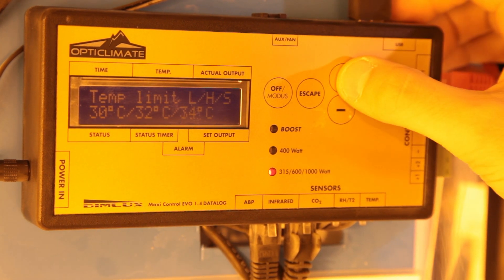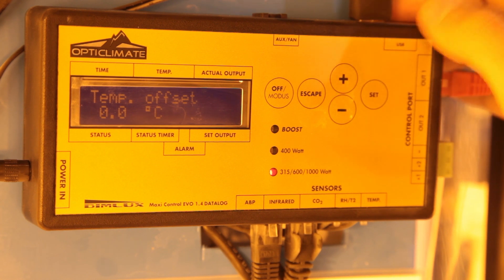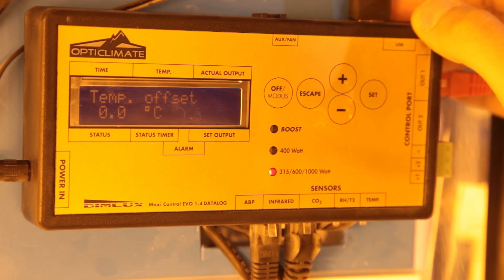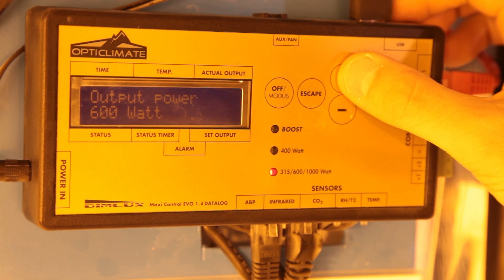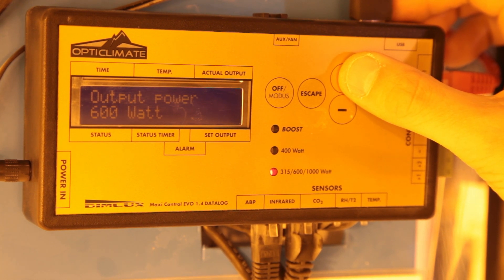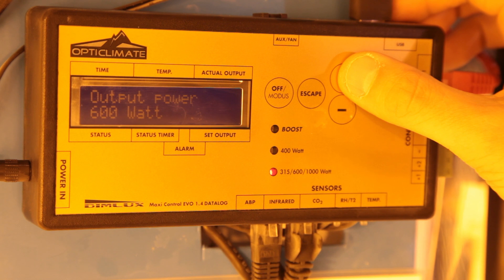Then we've got temperature offset quite simply this is a way of calibrating your temperature sensor to put it in line with your other equipment. Output power which is used to choose the type of lighting system that you intend to use your maxi controller with whether it's a single or double CDM or a 600 watt or 1000 watt HPS unit.